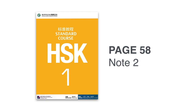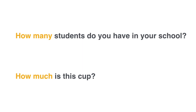Let's turn our textbook to page 58 and take a look at grammar point number 2. 'How many' can be expressed with the word 多少. Do you know what 多 and 少 literally mean? 多 means a lot, or many, and 少 means few. So 多少 — many or few? 多少 is a question word meaning 'how much' or 'how many.'